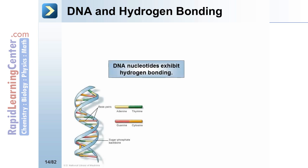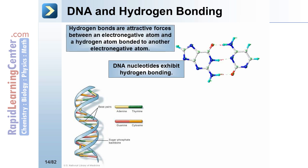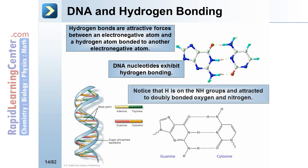DNA and hydrogen bonding. DNA nucleotides exhibit hydrogen bonding — attractive forces between an electronegative atom and a hydrogen atom bonded to another electronegative atom. Notice hydrogen atoms are on the NH groups and attracted to doubly bonded oxygen and nitrogen. Guanine and cytosine have three hydrogen bonds.